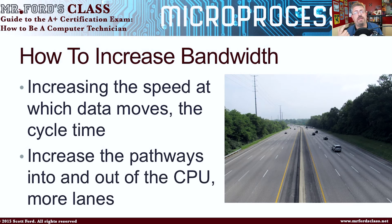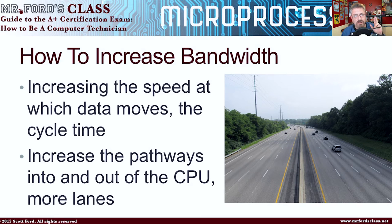The next way to increase bandwidth, going back to the highway, is to have more lanes. If grandma's doing 20 in a 50 mile-an-hour zone in one lane of traffic, everybody's going slow. But if grandma is driving on a five-lane highway doing 30 miles an hour, besides possibly getting hit by a semi, she is not holding up traffic too much because there are four other lanes where cars can go by. So with bandwidth, if we have multiple lanes that information can flow through, you're also increasing how much information can come in and go out.